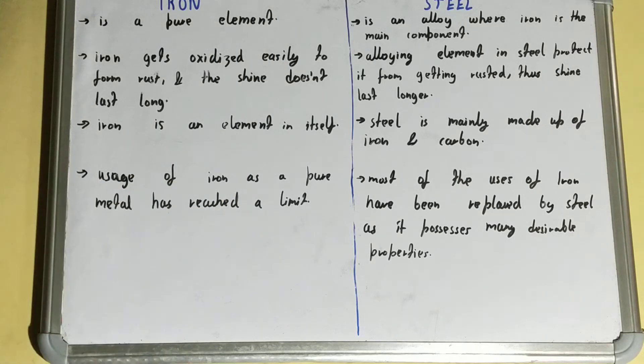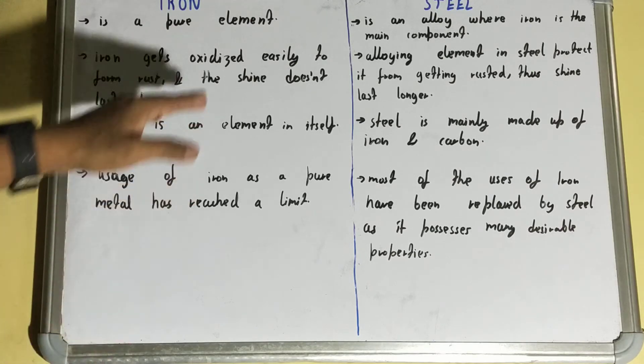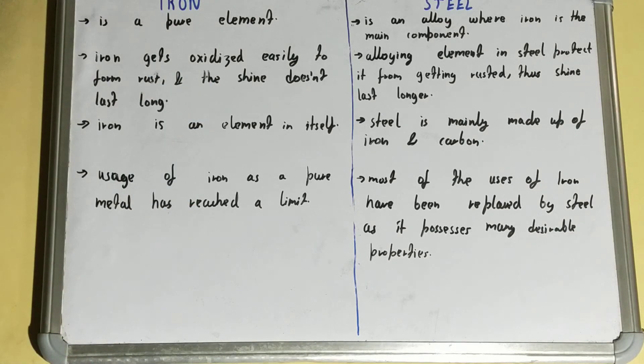Next, if we talk about iron, the uses of iron as a pure metal have reached a limit or are very limited because it has a rusting problem which makes it almost negligible for long-term purposes.